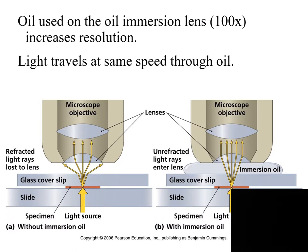The oil immersion lens uses oil to increase resolution. Light travels at the same speed through the oil, which helps to increase the sharpness and contrast of the image. If you look at the image without oil, only three rays are captured by the objective lens, whereas with oil, five rays are captured. Therefore, the oil helps to increase resolution, contrast, and sharpness.